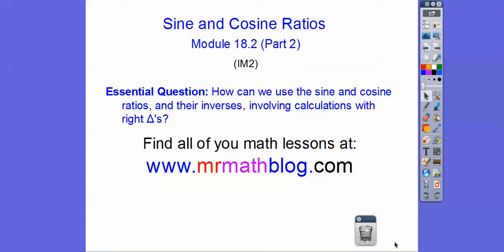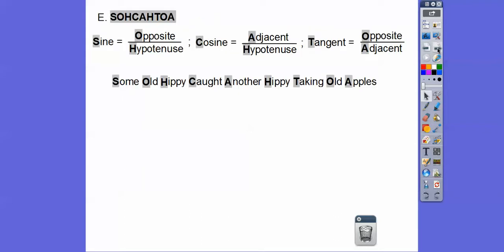Hey folks, this is part two of the sine and cosine ratio. I'm going to review what we did in the last lesson: SOHCAHTOA, S-O-H-C-A-H-T-O-A. The sine stands for opposite over hypotenuse, the cosine equals adjacent over hypotenuse, and the tangent is opposite over adjacent.